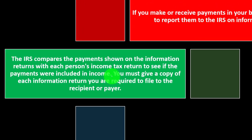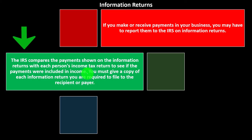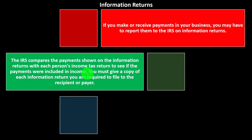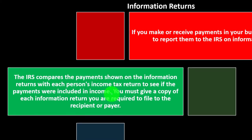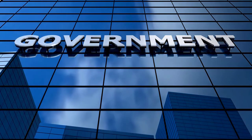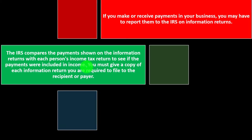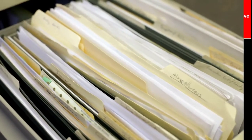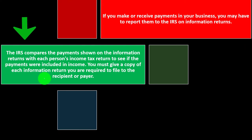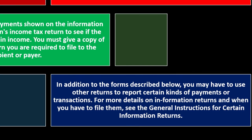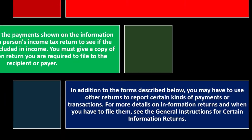This falls in line with our general rule of how the income tax system works. The IRS has leverage on the person paying. There are two sides to every transaction: one side is the payer, the other side is the recipient. The recipient is the one that has to record income, which is bad for taxes. The payer wants to get a deduction, which is good for taxes. The government has leverage on the payer to get them to rat out who they paid, so that they make sure the other person reports the income. So you must give a copy of each information return you're required to file to the recipient or payer.